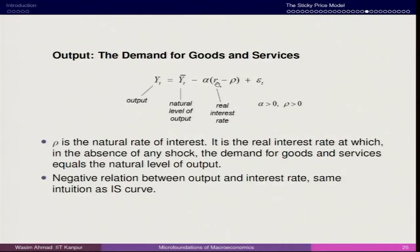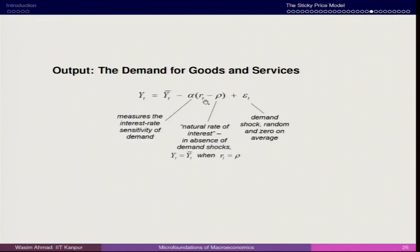This IS curve links directly with the IS-LM framework — the Hicksian idea. The value of α plays an important role: if it is higher, the output is more sensitive to the rate of interest; if lower, it is less sensitive. If Rt equals ρ, the deviation term becomes 0 and Yt equals Yt-bar — the ideal situation for most economies. The εt term represents the demand shock already mentioned.